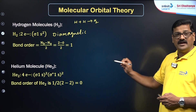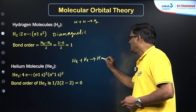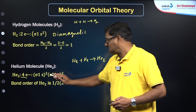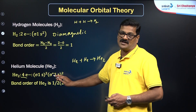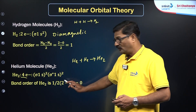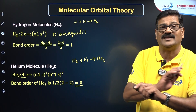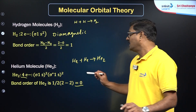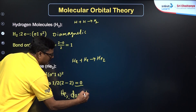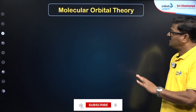For the helium molecule, He + He gives He₂. Each helium has two electrons, so He₂ has four electrons: configuration σ1s² σ*1s². Bonding molecular orbital electrons = 2, antibonding = 2, so bond order = (2 − 2)/2 = 0. Since bond order is zero, He₂ never exists.